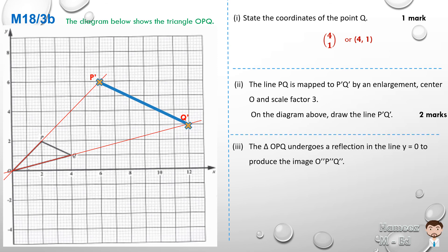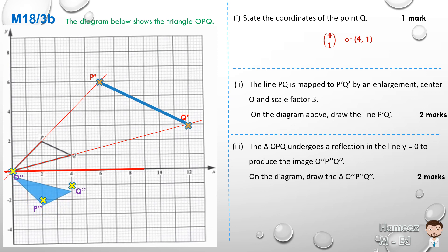Part three: triangle OPQ undergoes a reflection in the line y = 0, which is the x-axis, to produce image O''P''Q''. Since O lies on the mirror line, its reflection remains there so O'' is the same as O. P is 2 units above the x-axis so when reflected P'' will be 2 units below, at (2,-2). Q is at (4,1), one unit above the line, so when reflected Q'' will be one unit below at (4,-1). We can now draw the triangle to show the reflection.